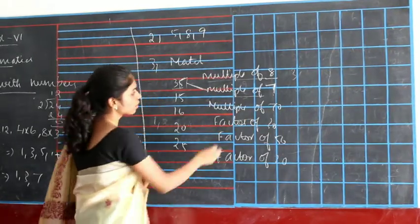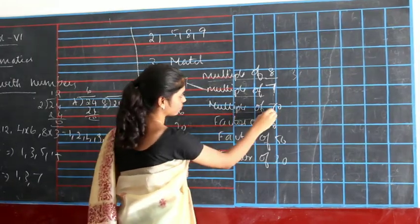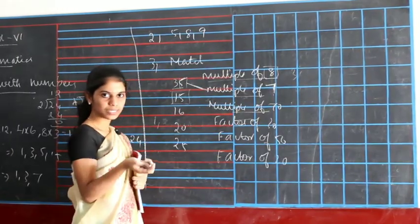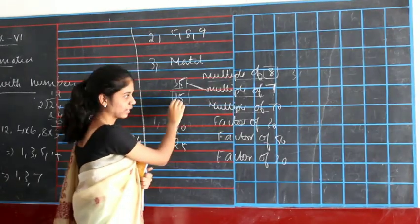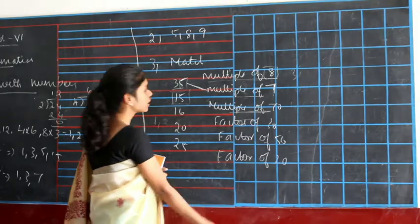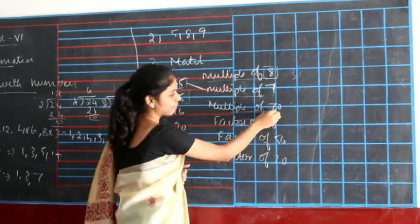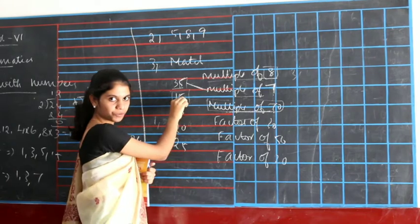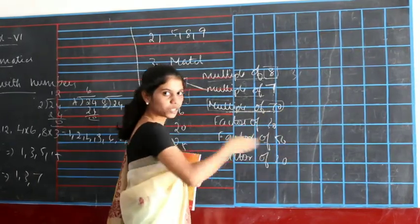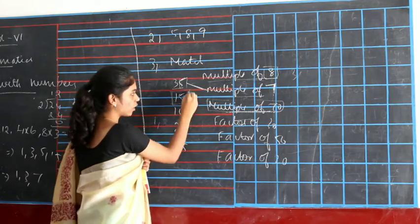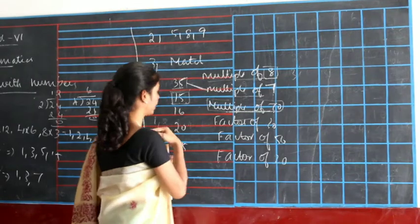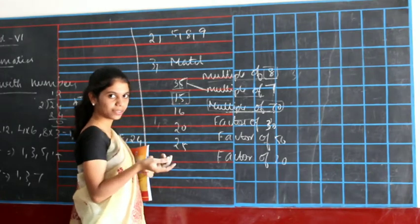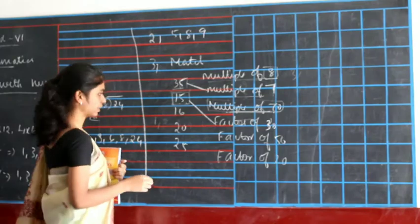Now we have 70 and we are checking for 15. Multiples of 8 are 8, 16 — 8 cannot produce 15. For 70 in the 15 times table, 70 is greater than 15, and multiplying 70 would give an even greater number, so 15 cannot be a multiple of 70. But if you multiply 15 by 2, you get 30. So 15 is a factor of 30.